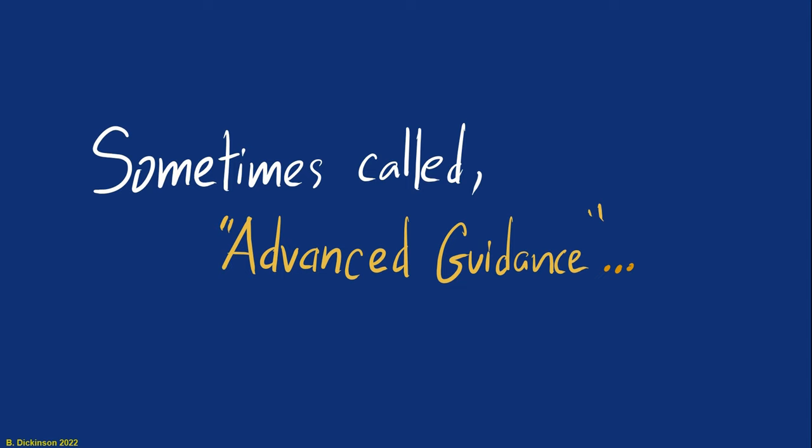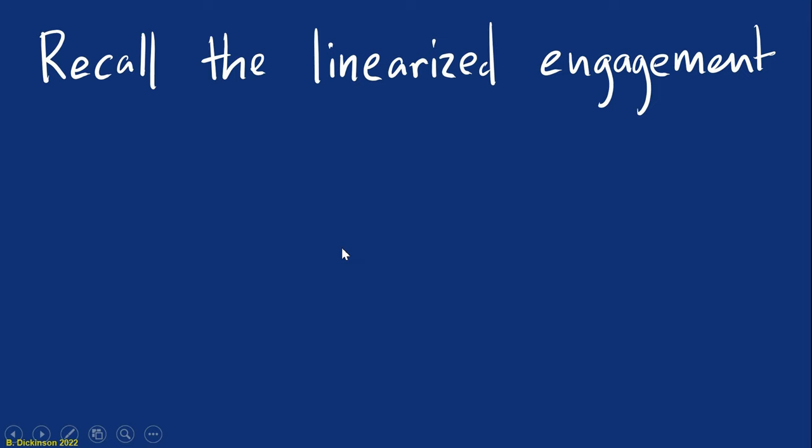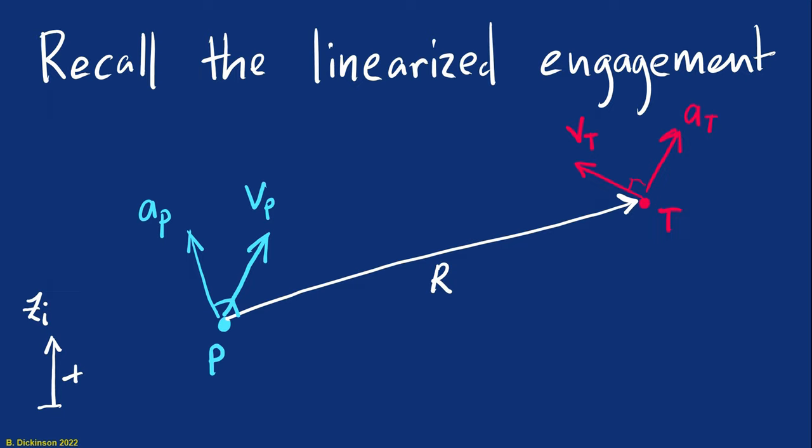Now, towards the problem statement, let's remember our linearized engagement. First thing to recall is that we were confined to a single spatial dimension for the kinematics. We have our pursuer and target, here's our range vector, the velocity vectors, their maneuver vectors. The target acceleration is perpendicular to its velocity, while the acceleration of the pursuer here is shown perpendicular to the range vector or to the line of sight direction. This direction of acceleration is associated with true proportional navigation.